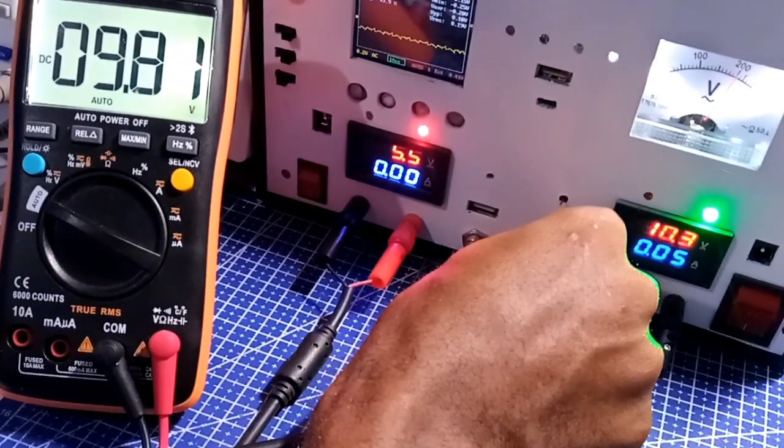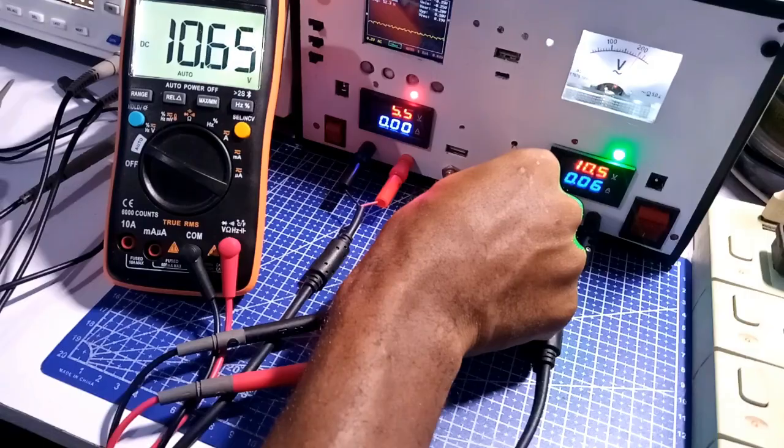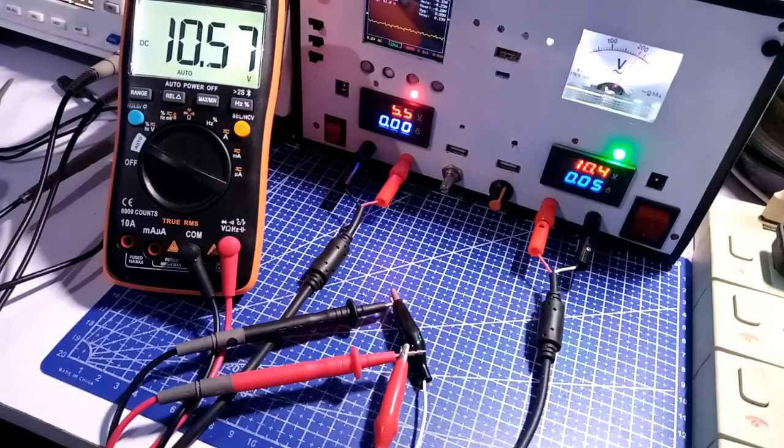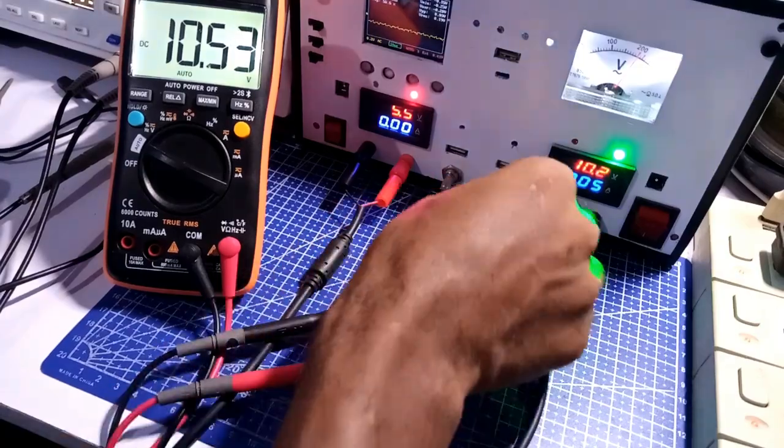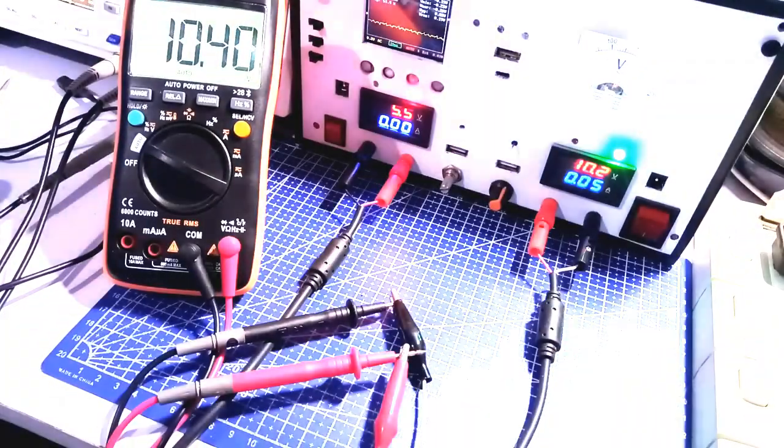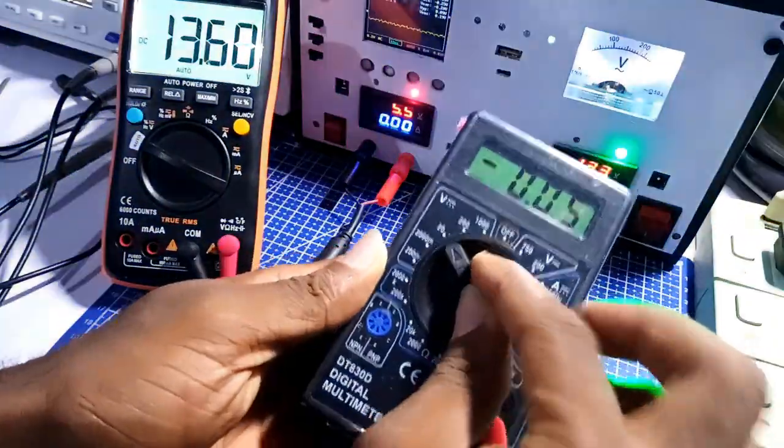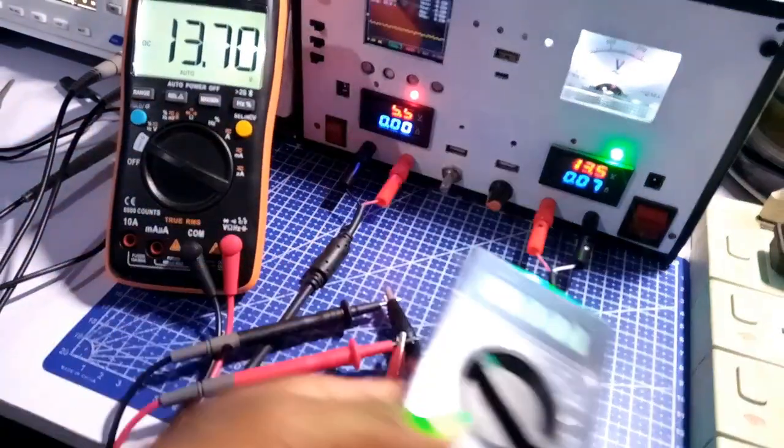There is a 0.1V difference from the two values and that is understandable as the meter in my power supply draws a bit of power from the output in order to visualize the voltage values, unlike my multimeter that has its own independent power from the inbuilt batteries. The values also correspond as I tested the system using another multimeter.